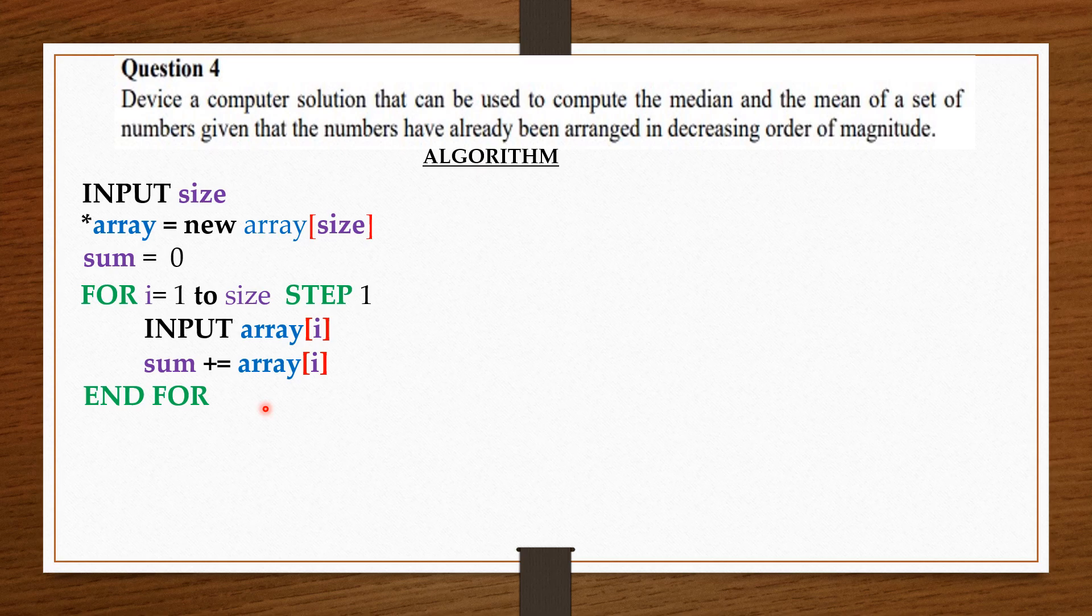Knowing the sum and the size of the set of numbers, we can compute for the mean. Now, to find the median, we must first know whether the size of the set is either even or odd, since either way will require different approaches for finding the median.